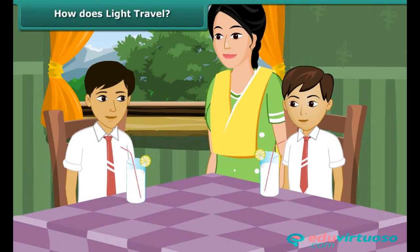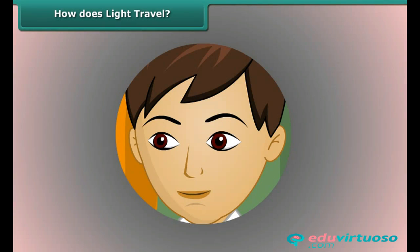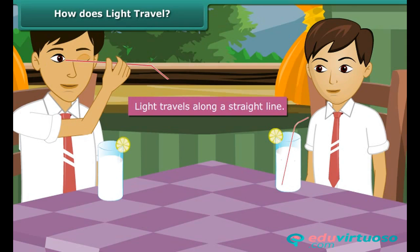You and your brother Ashish have just returned from school. Your mischievous brother picks a straw out from a glass of lemonade and tries to look at you through it. After a while the straw bends, and when Ashish tries to look at you through it he is unsuccessful. This activity proves that light travels in a straight line.